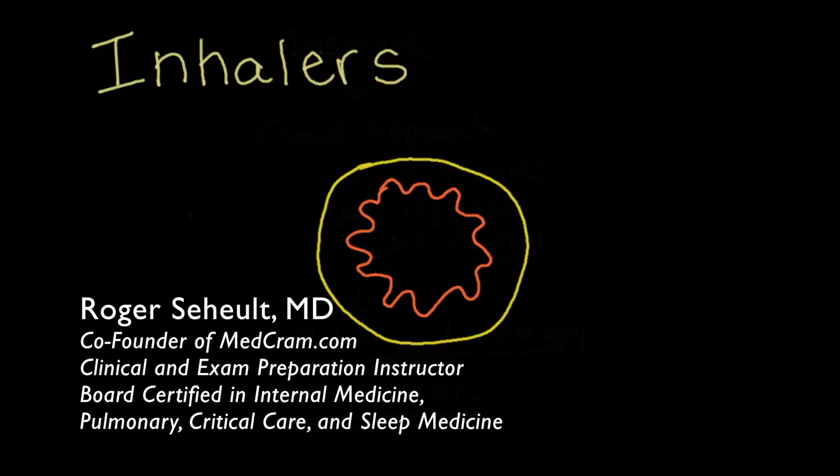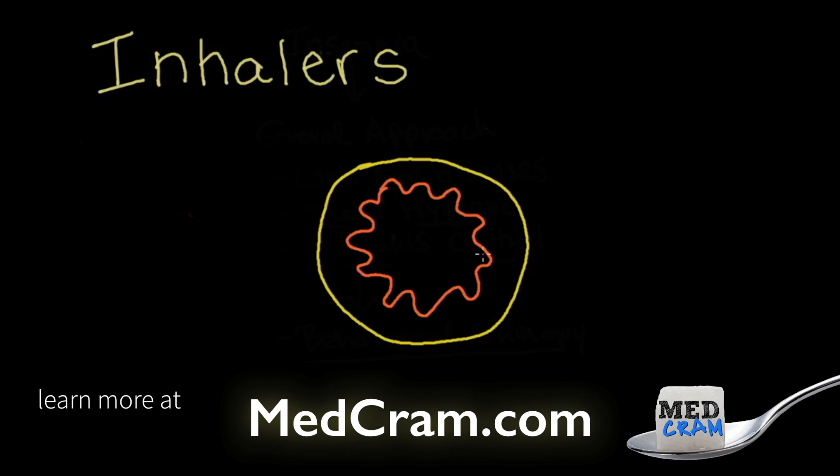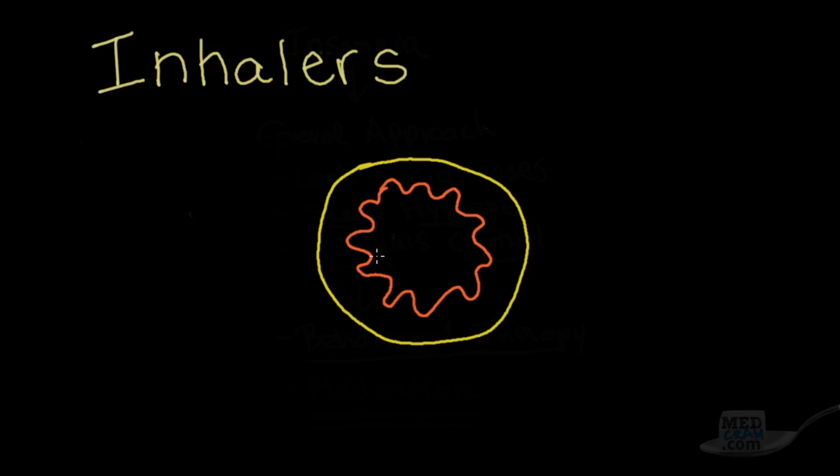Welcome to another MedCram lecture. We're going to talk about inhalers. What's the quick and dirty on inhalers? Here we've got a bronchus, which is the airway that you breathe through, and in the middle is smooth muscle which limits the aperture or the lumen of that bronchus. If the smooth muscle contracts, the lumen gets smaller.